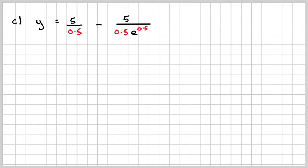Therefore, y will equal 5 over 0.5 minus 5 over 0.5 e to the 0.5x. We want to know when y equals 2. So rearranging that, we'll take the 2 over here and this over here.